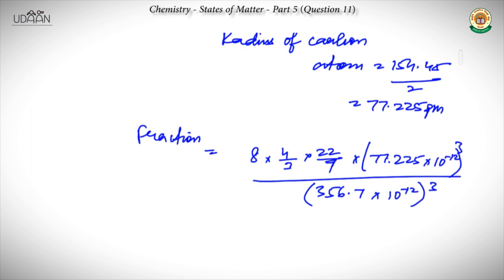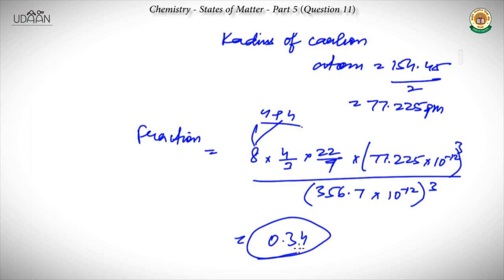The effective number of atoms is 8 because in FCC there are 4 effective atoms, and there are 8 tetrahedral voids total (twice the number of atoms). Alternate tetrahedral voids gives half of 8, which is 4, so total effective atoms equals 4 (FCC) plus 4 (alternate tetrahedral voids) = 8. The packing fraction comes out to be 0.34.